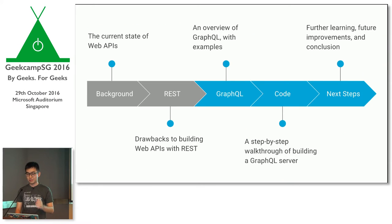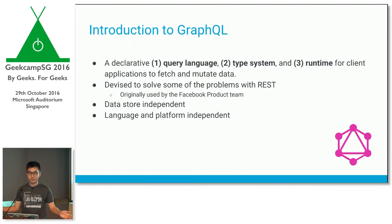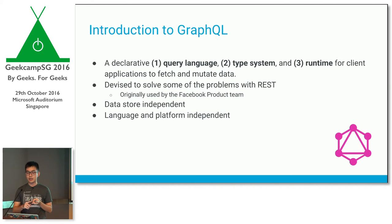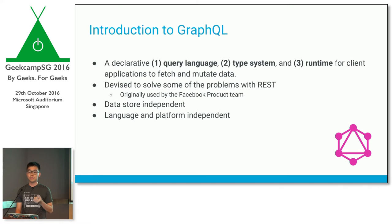Now we'll look at GraphQL, which is the most exciting part. GraphQL is actually more than one thing. First, it's a query language for clients to describe the shape of the data they need to pull from the server. Second, it's a type system for both client and server to have a shared vocabulary of the objects they're discussing. And finally, it's a runtime for the server to translate client queries into a JSON response. It was devised by the Facebook product team to solve some of the problems we've seen.